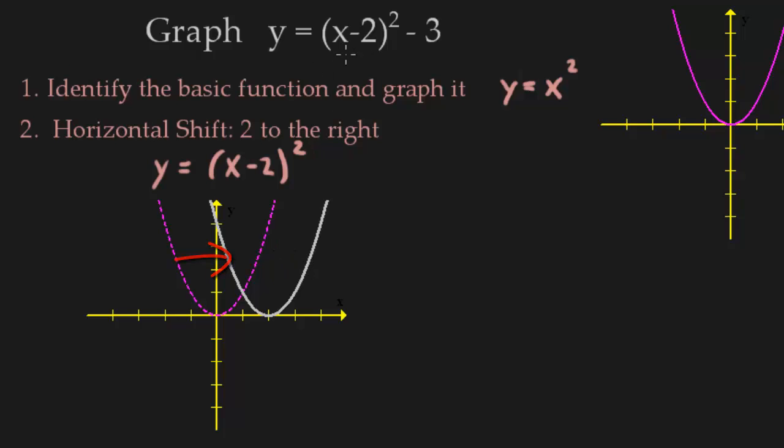Alright, so go back up here. We've dealt with this piece. Now we have this minus 3 on the outside. That was a vertical shift down 3 units.